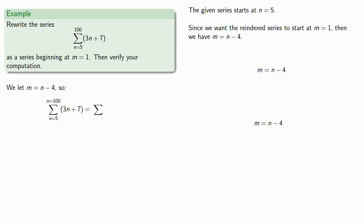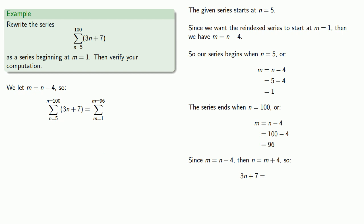As with the definite integral, we want to make sure that everything is in terms of the same variable. Since our index variable is now m, we want everything in terms of m. The given series begins when n equals 5, so m equals 1. And the given series ends when n equals 100, so m equals 96. Finally, since m equals n minus 4, then n equals m plus 4. So the terms of our series, 3n plus 7, can be rewritten in terms of m as 3m plus 19.